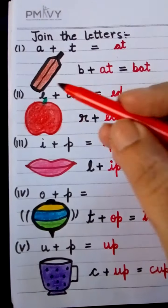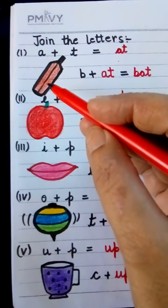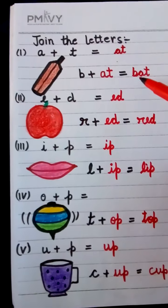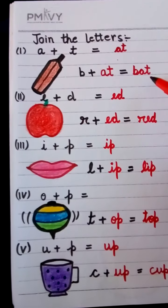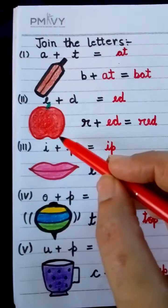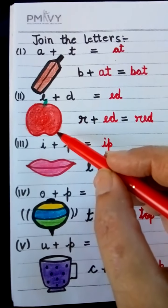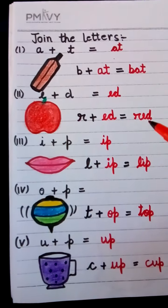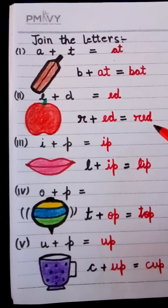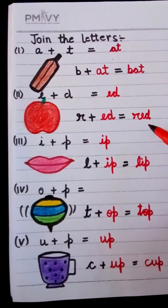Now look and read. This is Bat. B-A-T. Bat. This is Red. Apple is Red. R-E-D. Red.